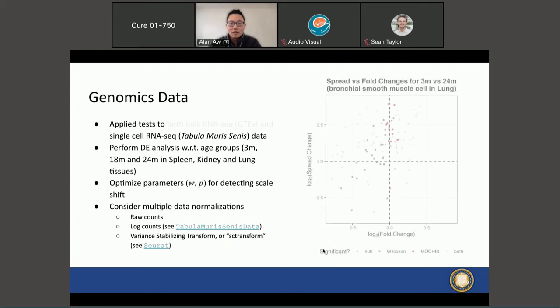To show you one example of a finding, if you look at this plot you can see differentially expressed genes that were called by either running the Wilcoxon test or our test, which we call Mochi's. On the x-axis I'm plotting the fold changes as well as the spread changes. If you look at the red points, which are the DE genes called by the Mochi's test, we see that a lot of these genes are lying in parts of the graph where spread changes are more extreme than the fold changes.